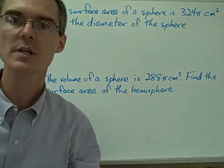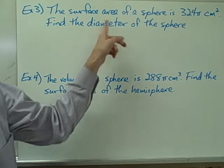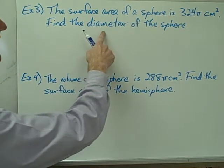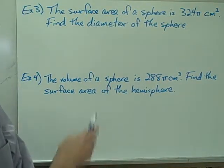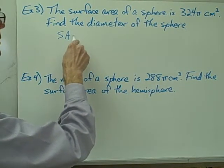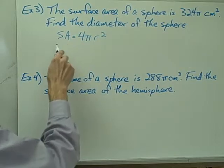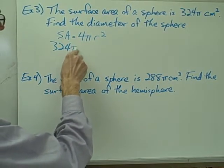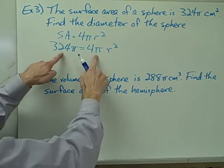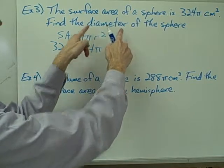Now let's look at using the formulas to do some slightly different examples. In example 3, I'm told the surface area of a sphere is 324 pi square centimeters, and I'm asked to find the diameter of the sphere. We're kind of working backwards. The surface area is 324 pi, and I know the formula for the surface area of a sphere is 4 pi times the radius squared. Once I find the radius, I can calculate the diameter.